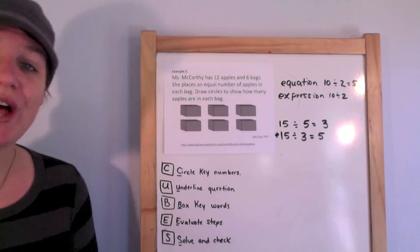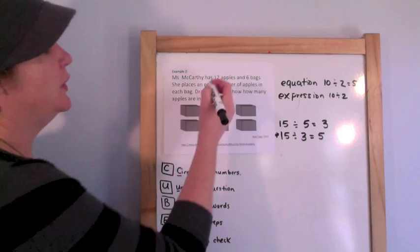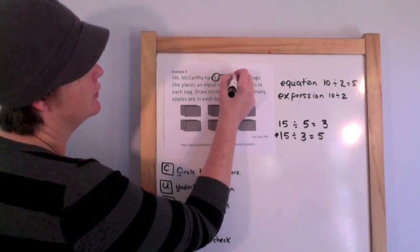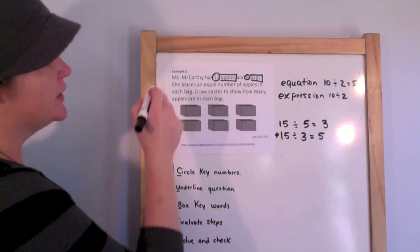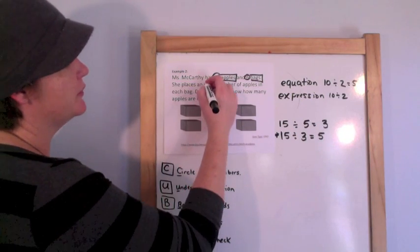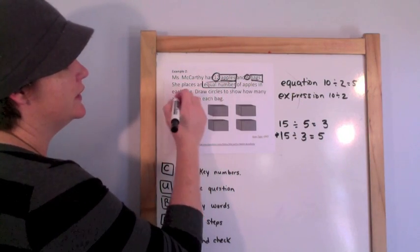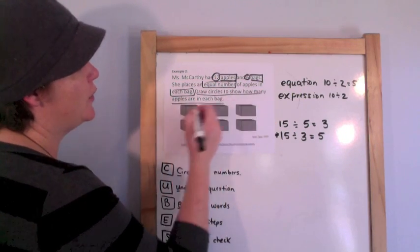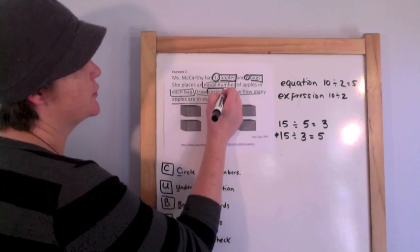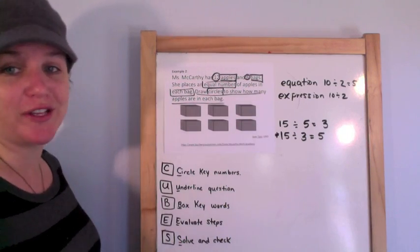So here we go. It says Ms. McCarthy has 12 apples and 6 bags. She places an equal number of apples in each bag. Draw circles to show how many apples are in each bag.